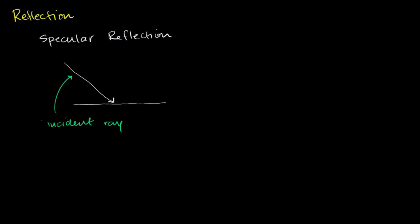It approaches the surface, and you can almost imagine that it bounces off at essentially the same angle but in the other direction. So it hits the surface and then bounces off, and we would call this the reflected ray, after it has bounced off of the surface.